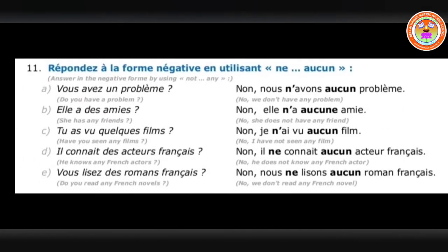Now we will go to the 11th exercise, the last exercise of lesson 1. Here they use the negation ne...aucun. Aucun agrees only with the gender, not with the number. We have to see what object you are going to replace and according to that give the form. If it is masculine, write aucun; if it is feminine, write aucune. And one more thing: ne...pas is written before and after the verb, but ne...aucun can be written after the past participle also — in passé composé tense.